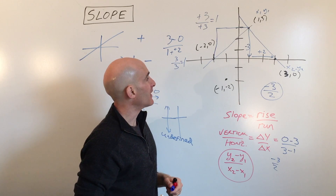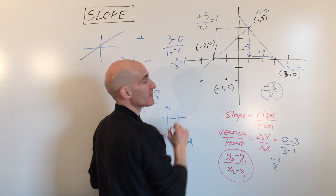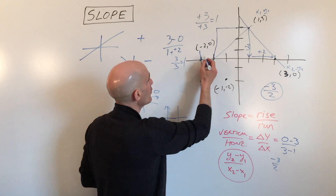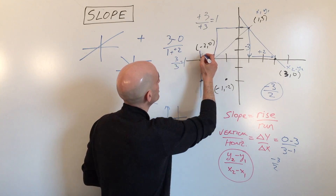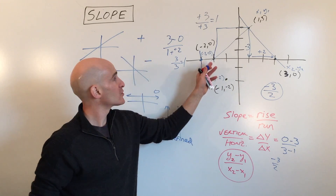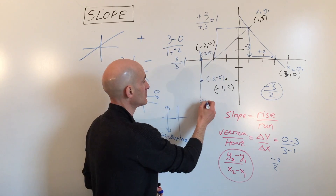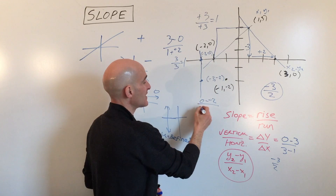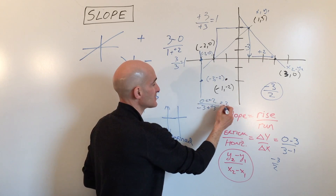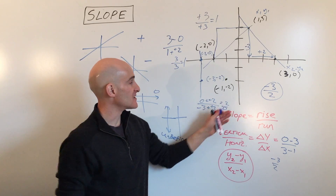For another example, consider the points negative three, zero and negative three, negative two. Applying the slope formula — y2 minus y1 over x2 minus x1 — we get zero minus negative two over negative three minus negative three, which is positive two over zero. Since we can't divide by zero, this slope is undefined.